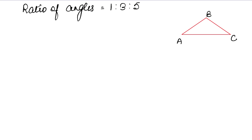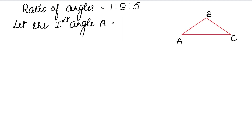When we have a ratio, we let the angles be in terms of a variable. Let the first angle, which is angle A, be 1x. Because if you multiply one with x, the answer is that number — x will come, not just 1.